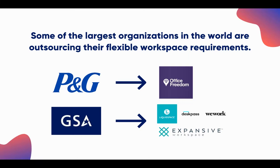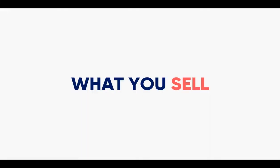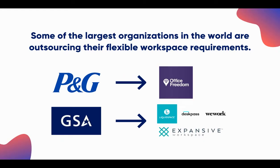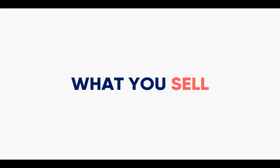Procter & Gamble, a big consumer packaged goods company headquartered in Ohio with folks everywhere, is working with Office Freedom — a group also based out of the UK but with offices elsewhere to handle their requirements. The GSA, the General Services Administration and part of the US government — the largest employer in the US — has said they want to prioritize flexible working. They're working with Liquid Space, DeskPass, WeWork, and Expansive to fill their requirements. This impacts how we think about who we're selling to and the channels through which we sell.